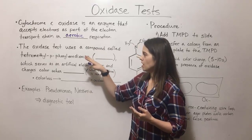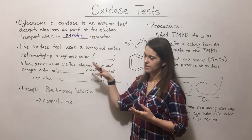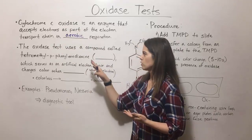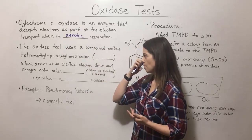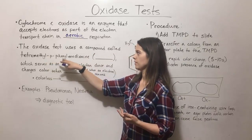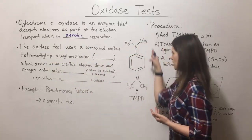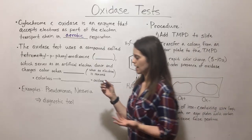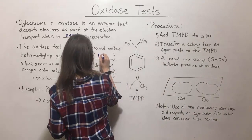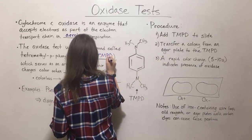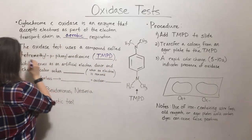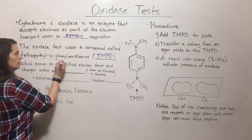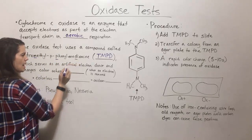The oxidase test tests for the presence of cytochrome C oxidase. It uses a compound called tetramethyl p-phenylene diamine — here's a picture of it — commonly abbreviated as TMPD, which comes from tetramethyl p-phenylene diamine.